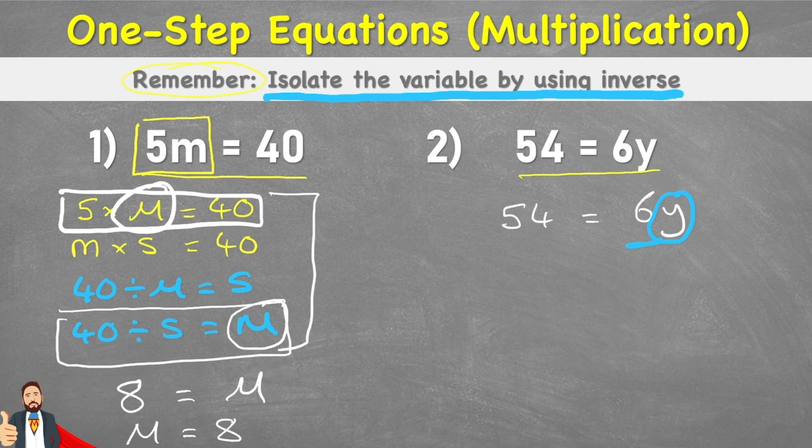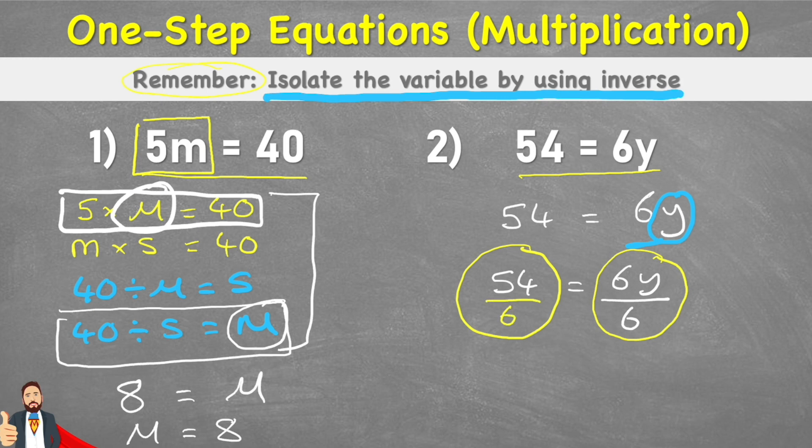The inverse of times 6 would be divided by 6. So I can rewrite this to be 54 equals 6y divided by 6. But if I've divided this side of my equal sign by 6, I then need to do it to this side too to make sure my equation is balanced. So I'm going to divide this side by 6 as well.